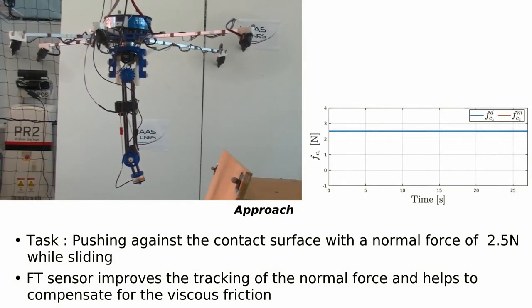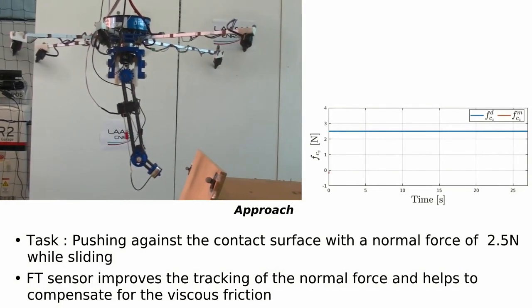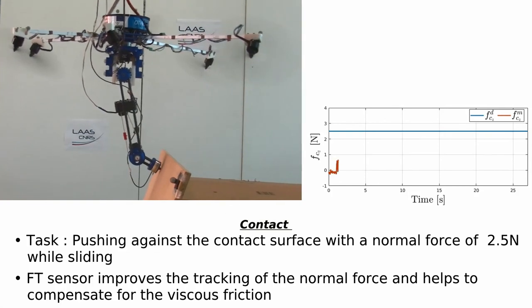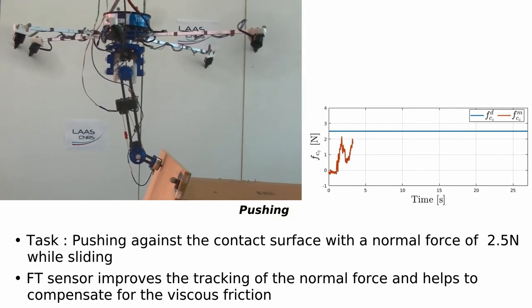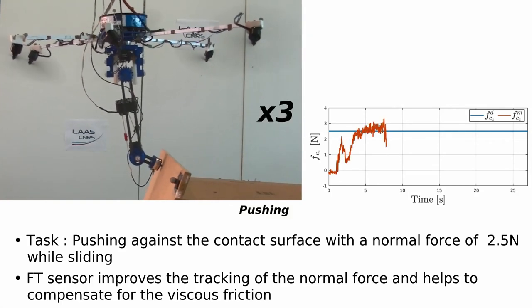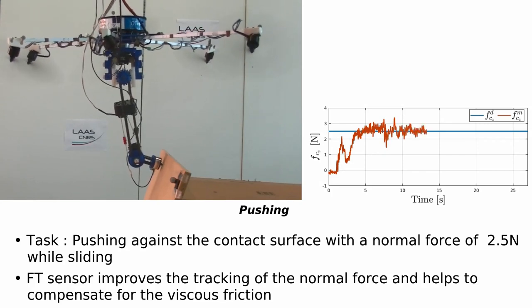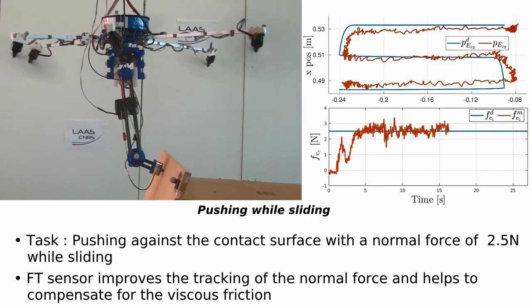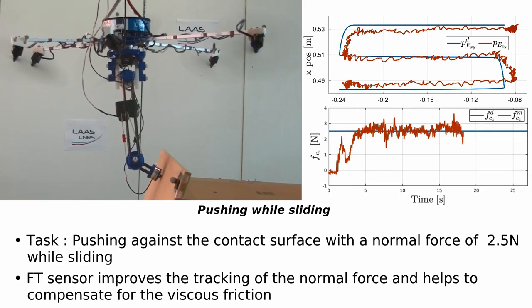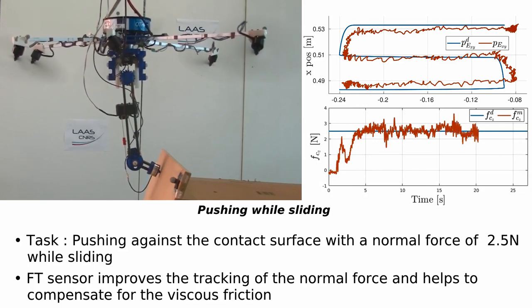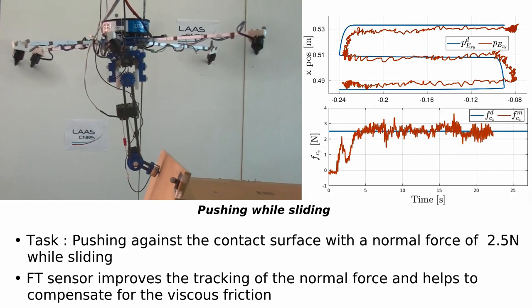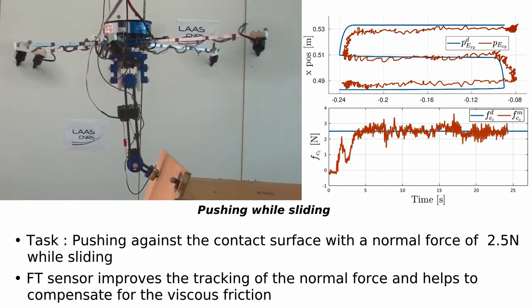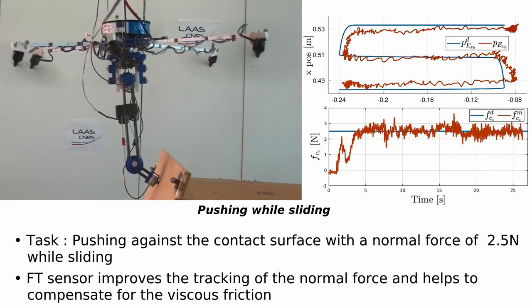We designed three different indoor experiments to validate the proposed task-based control strategy. In the first experiment, the robot end-effector must follow a desired trajectory while keep pushing against the wall with a force of 2.5 N. As we can see from the video, the controller is capable of achieving both tasks while maintaining a relatively small tracking error.